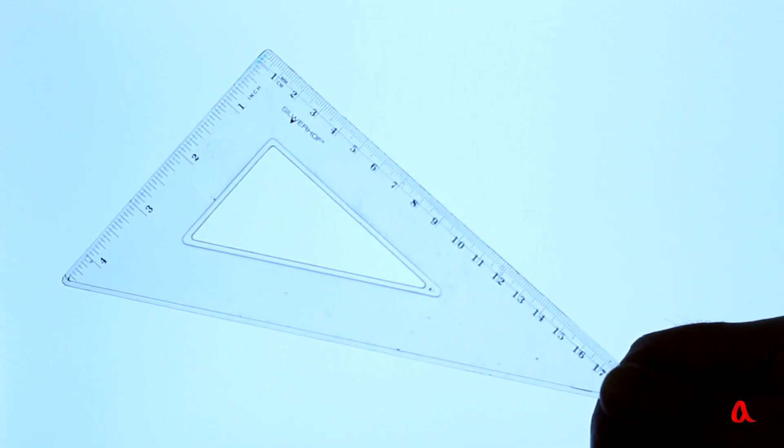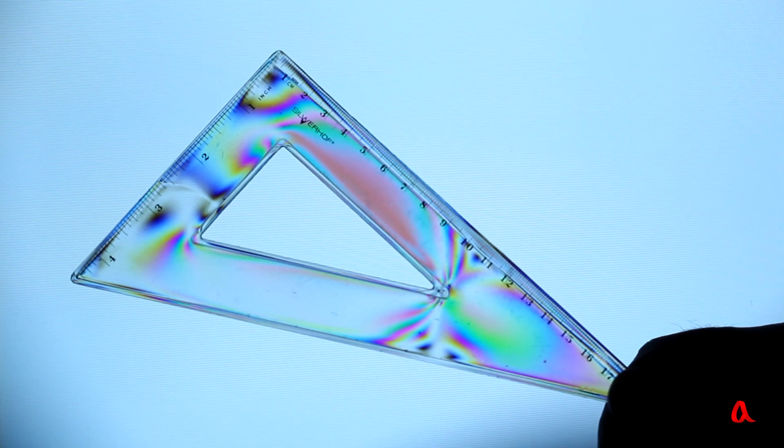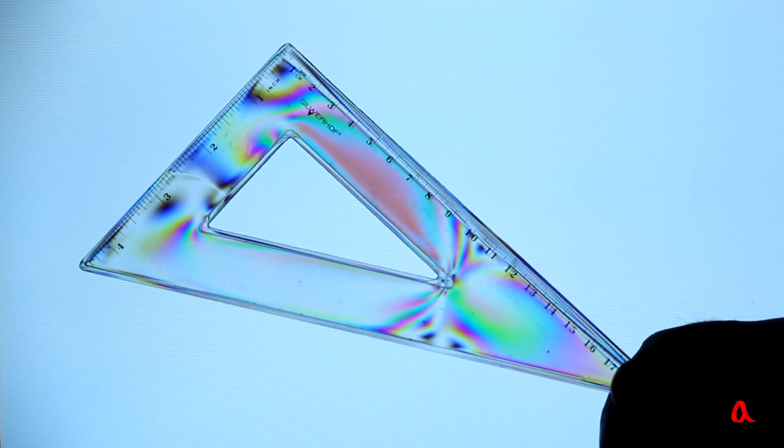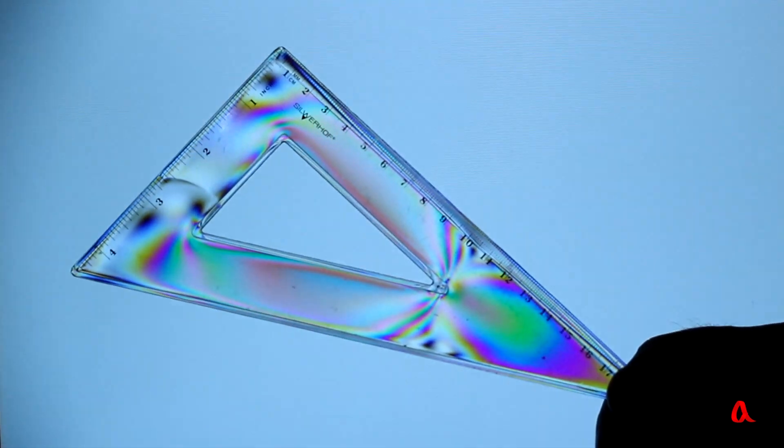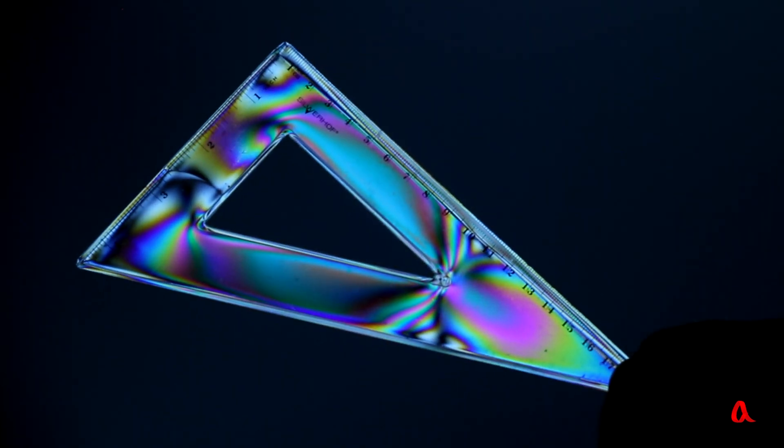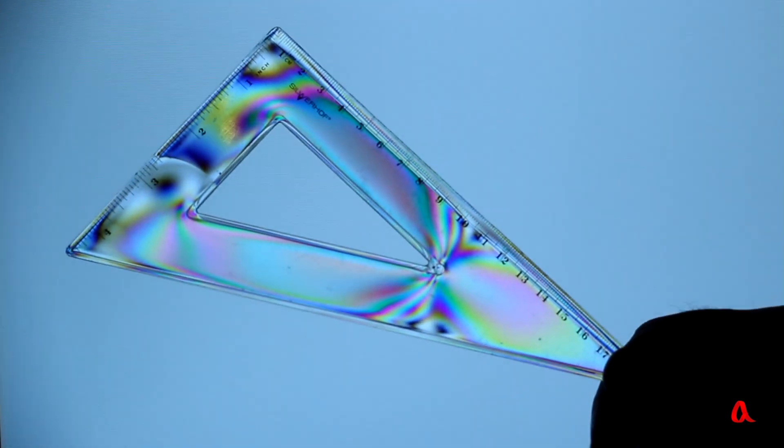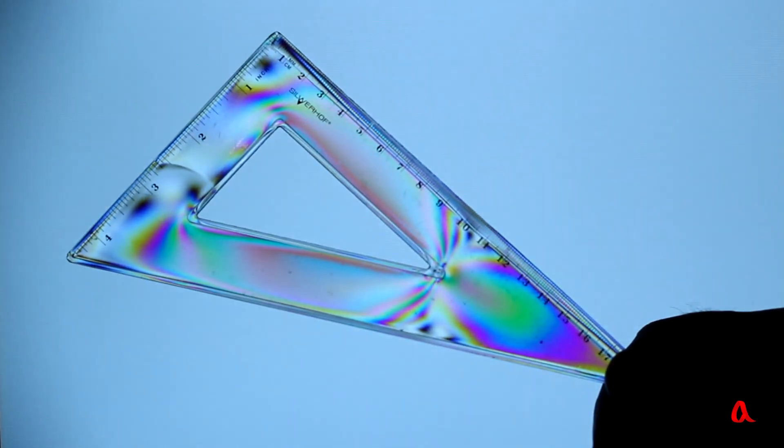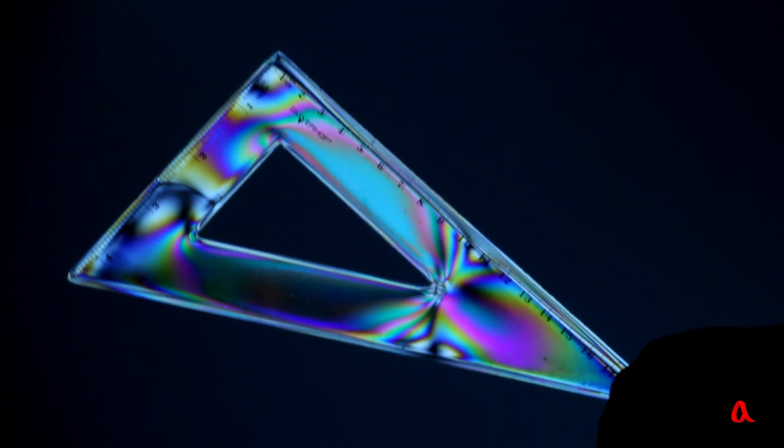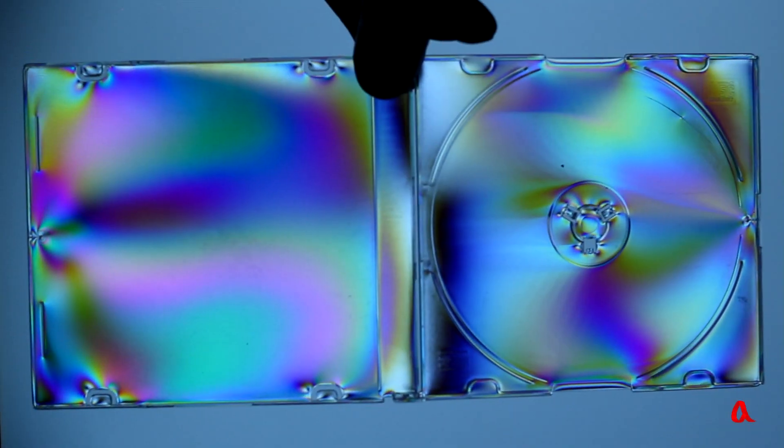And finally let's do another amazingly beautiful experiment. As a source of polarized light we will again use the computer screen. We put a set square made of transparent plastic in front of it. Now let's look at it through the second polarizer. The result is amazing! The transparent ruler is colored with rainbow colors. This method of observation also makes a CD box look very colorful.